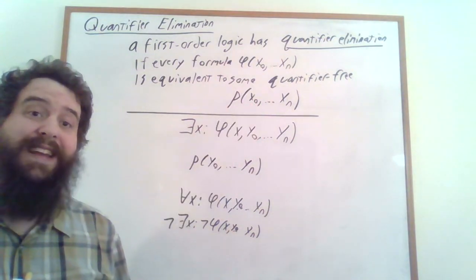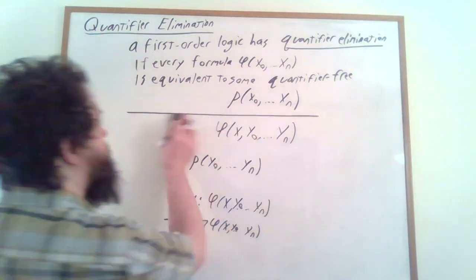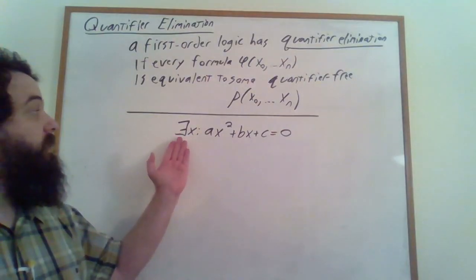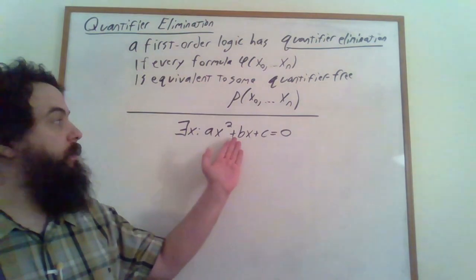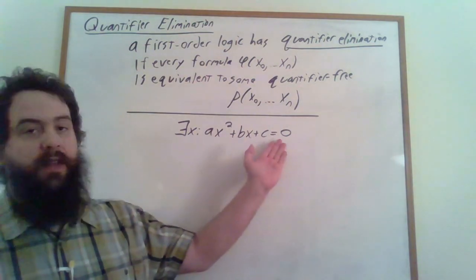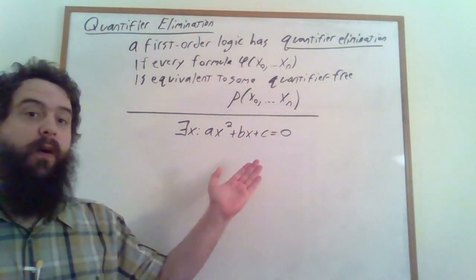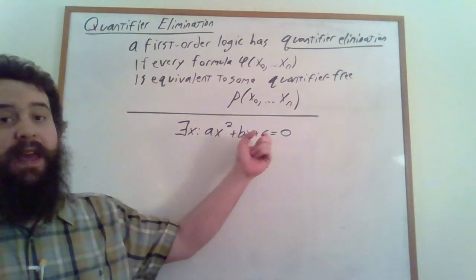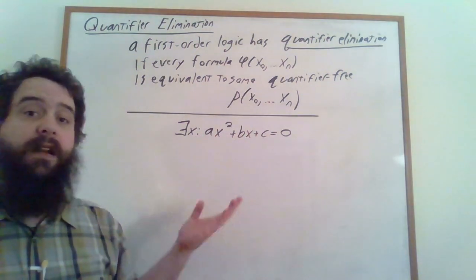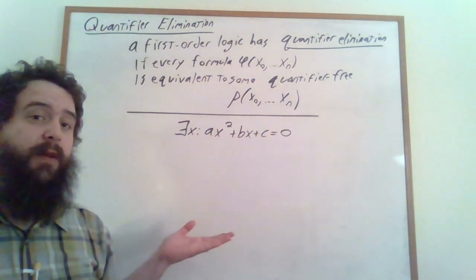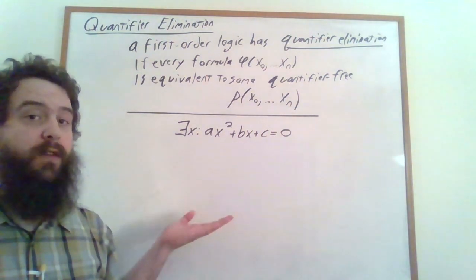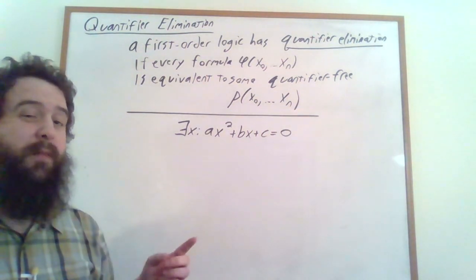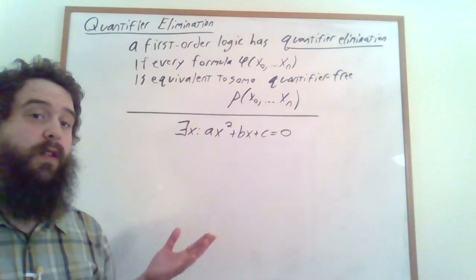Let's look at a concrete example. Suppose I have the formula: there exists an x such that ax squared plus bx plus c is equal to 0. This formula has three free variables a, b, and c, and depending on the value of those variables, it can either be true or false. Whether this formula is true or false also depends on the particular structure we're looking at. Let's say for a moment that we're looking at the complex numbers.